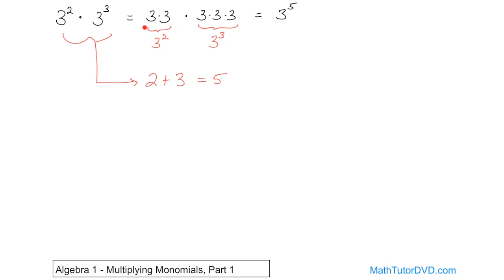You don't need to write this out every time — I'm just showing you this so that you'll understand. The way it works is, when you're multiplying something with an exponent times something else with an exponent, if the bases — the bottom numbers — are the same, then you just add the exponents together. So 3 raised to the power of 5. And that works in terms of variables just like it does for numbers.